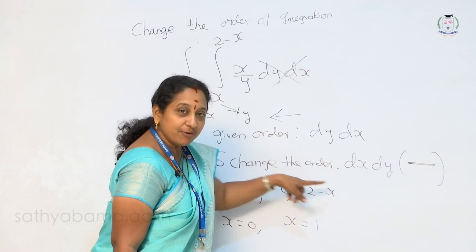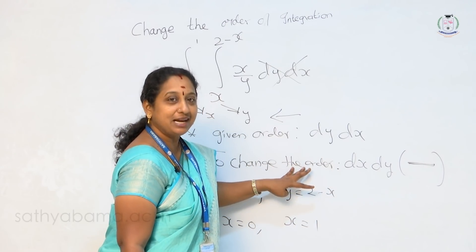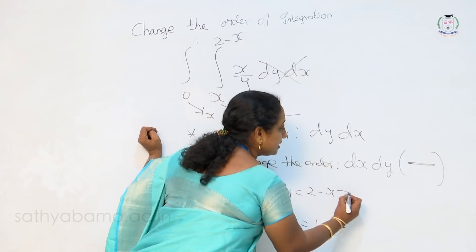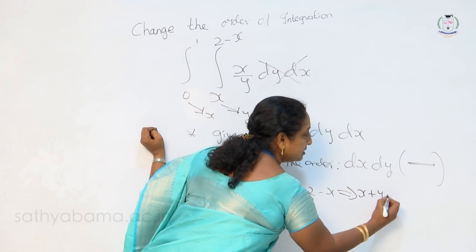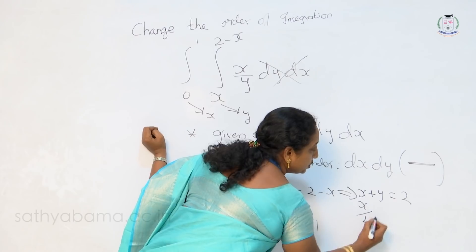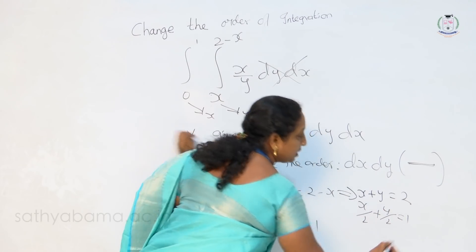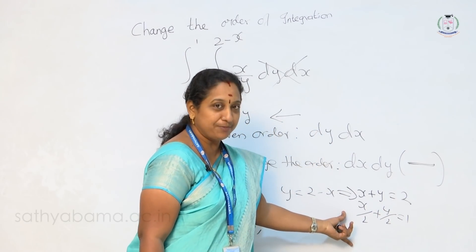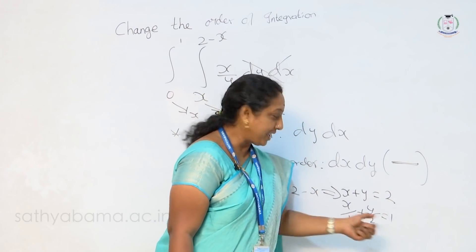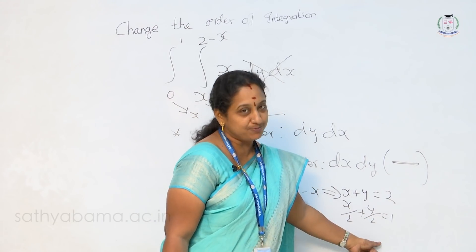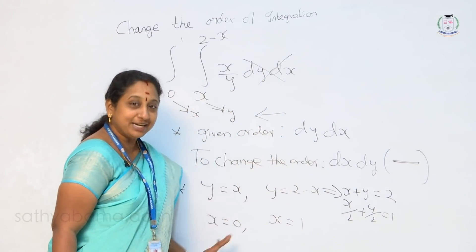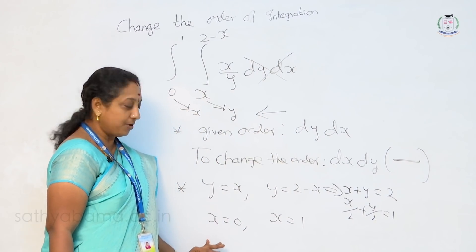Before plotting that region, it is better to rewrite everything in a proper manner. These are representing lines. Here x power and y power is 1, so this is also a line. Rewrite it as x plus y is equal to 2. That is x by 2 plus y by 2 is equal to 1, the intercept form. Remember: x by A plus y by B is equal to 1 means x intercept is A and y intercept is B. So these four are the regions and we may plot this region now.